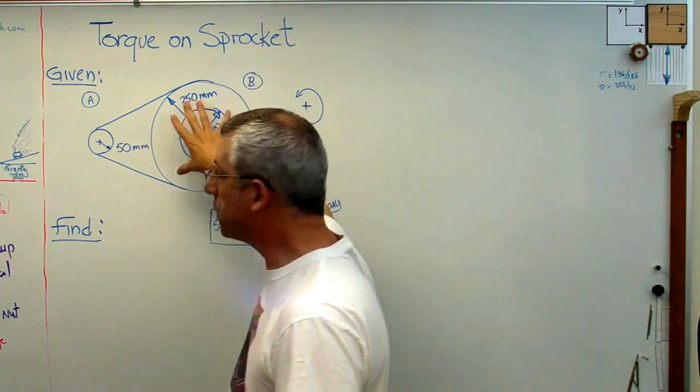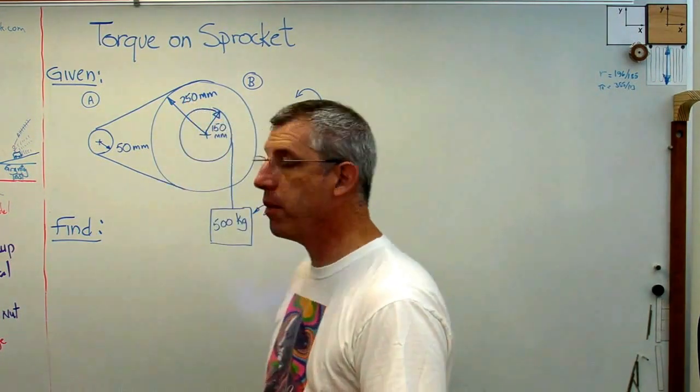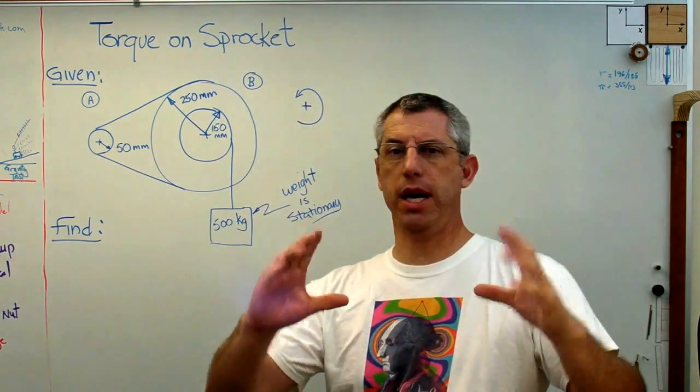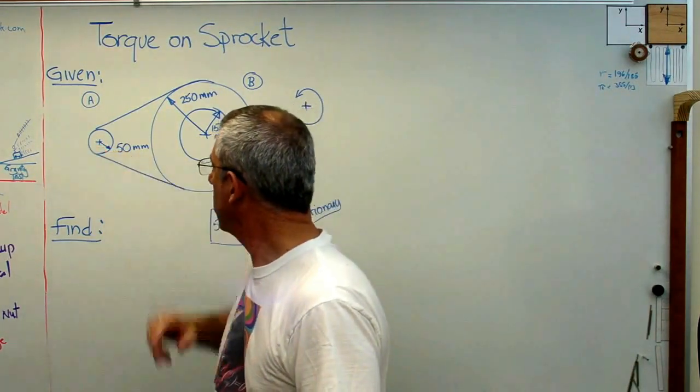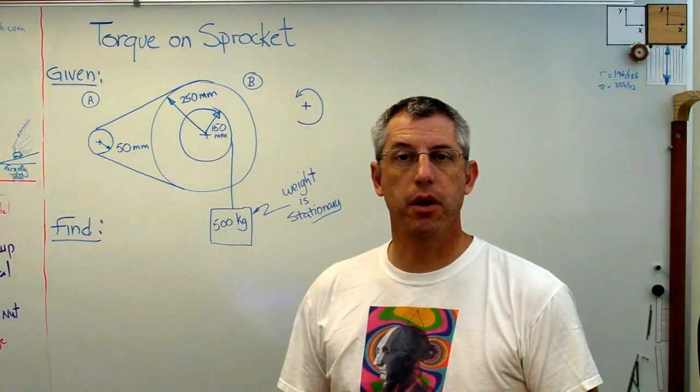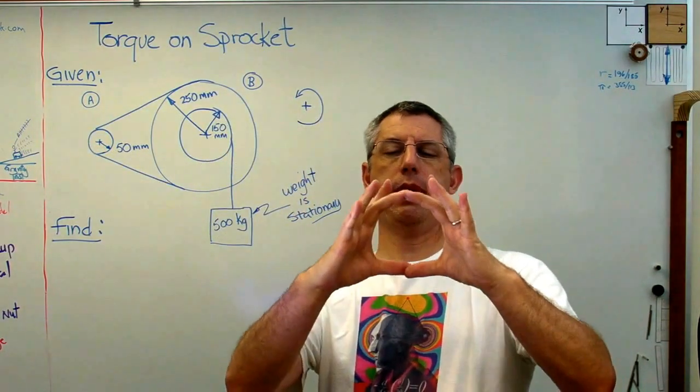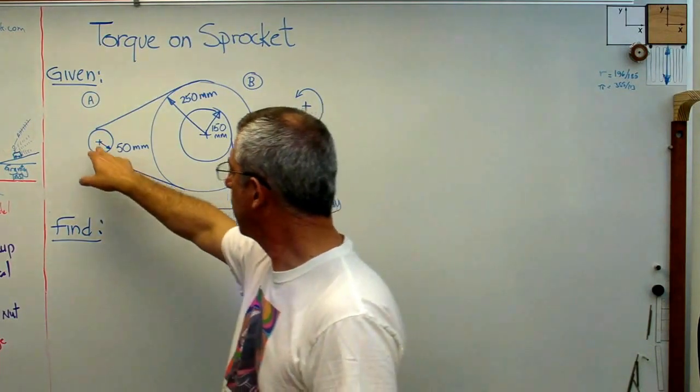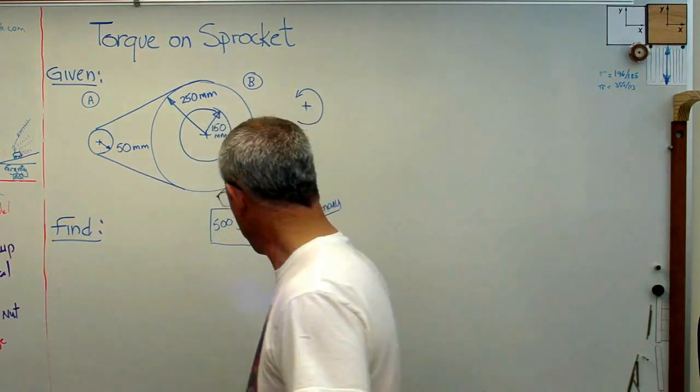What I've got here is a great big sprocket. It's got a diameter of half a meter, 500 millimeters, so it's about that big. This one right here has a diameter of 100 millimeters, so it's little. It's about that big. If you're interested, that 100 millimeters is about 4 inches if you want it in English units.